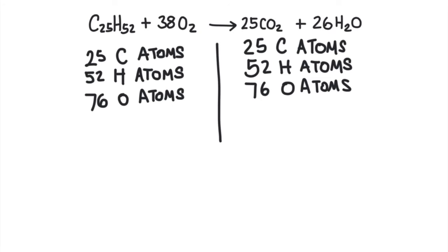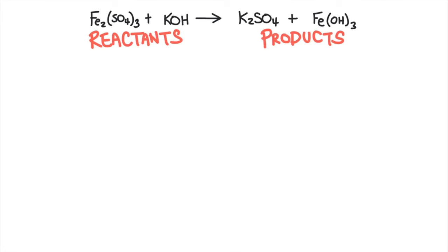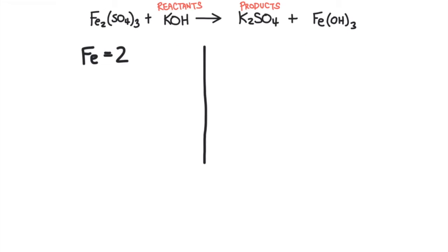Oftentimes chemical equations are written as a skeleton equation — that is an unbalanced equation — and we need to balance them. This equation is unbalanced because the total number of each atom is different on the product side compared to the reactant side. There are two iron atoms,